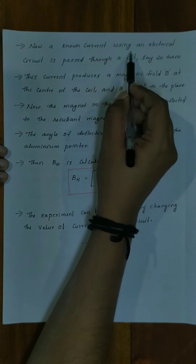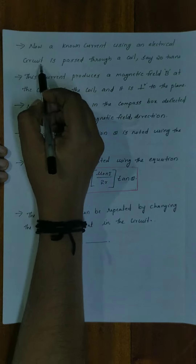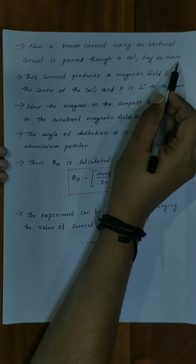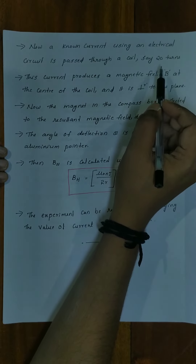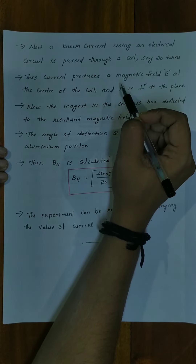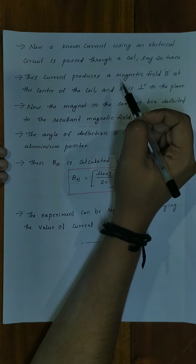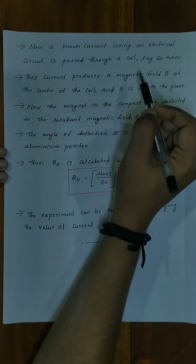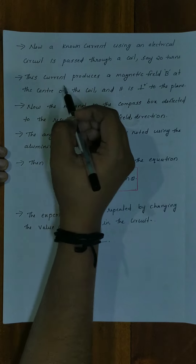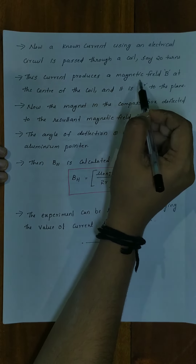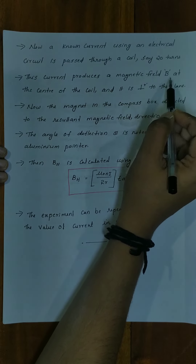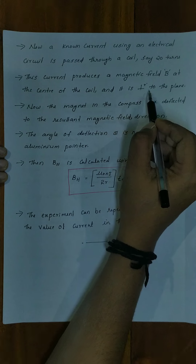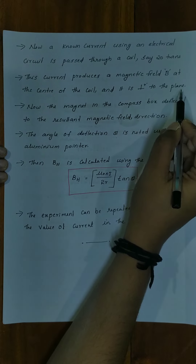A current using an electrical circuit is passed through the coil, say 20 turns. This current produces a magnetic field B at the center of the coil, and it is perpendicular to the plane of the coil.